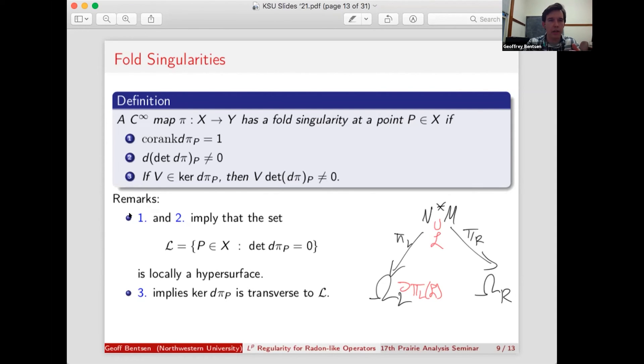Now, the first two of these conditions imply by the implicit function theorem that the set L of singularities of this map is locally a hypersurface. And the third condition implies that the kernel of this map is transverse to that hypersurface.